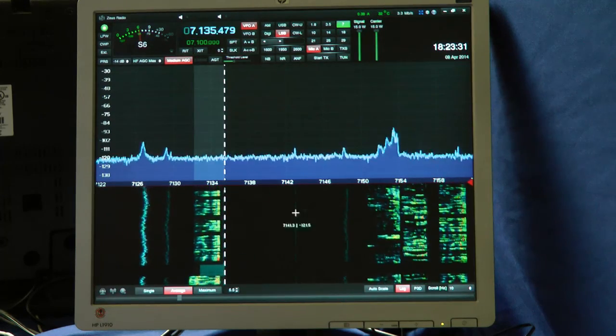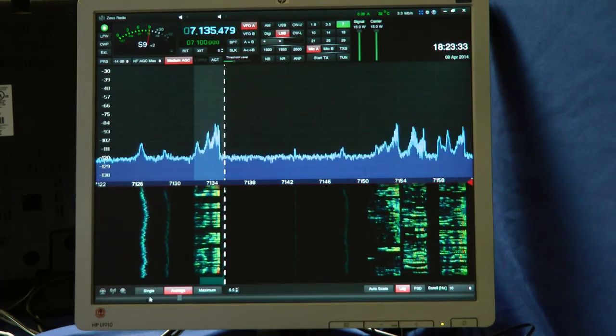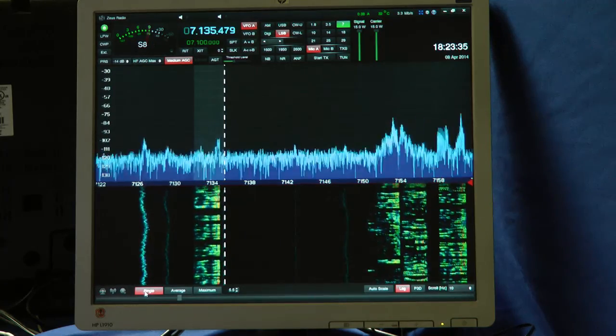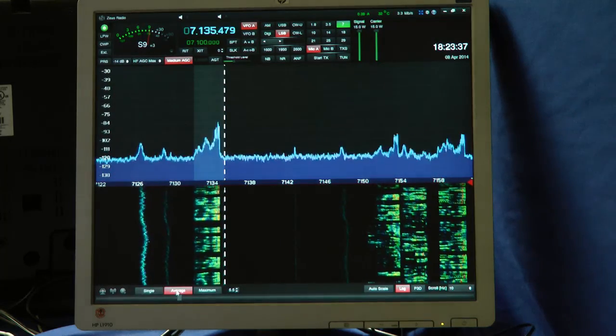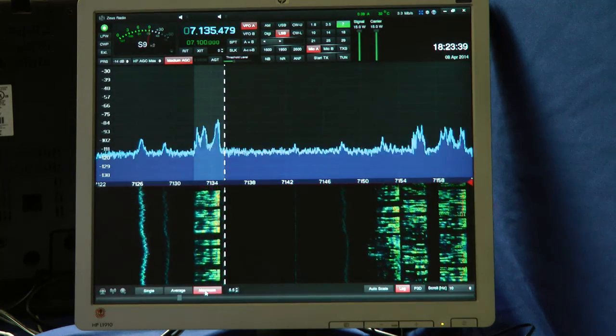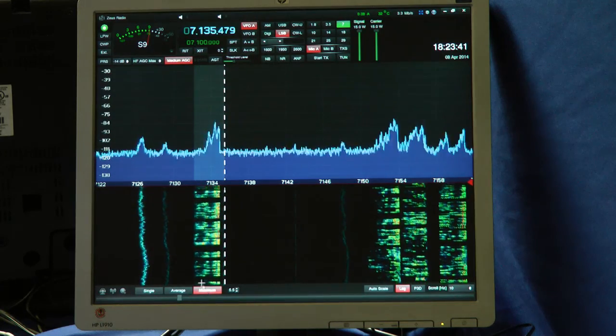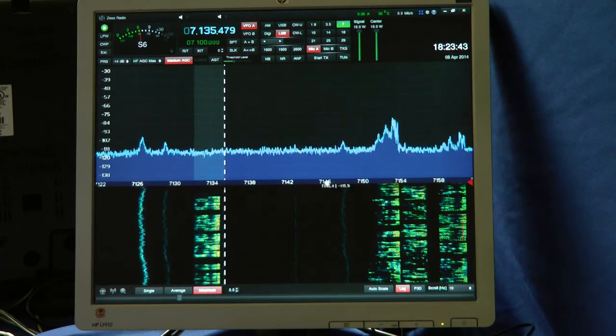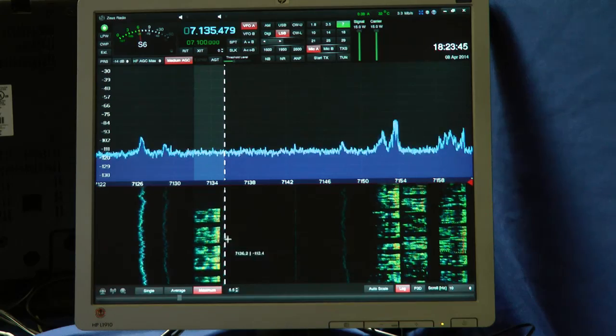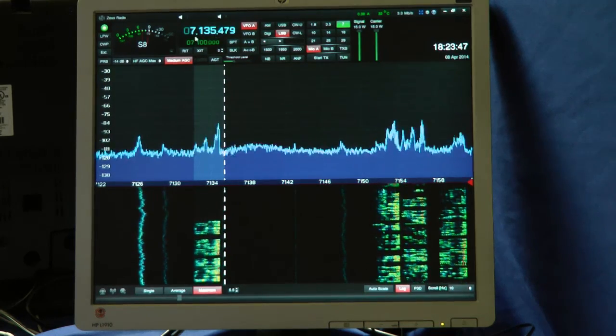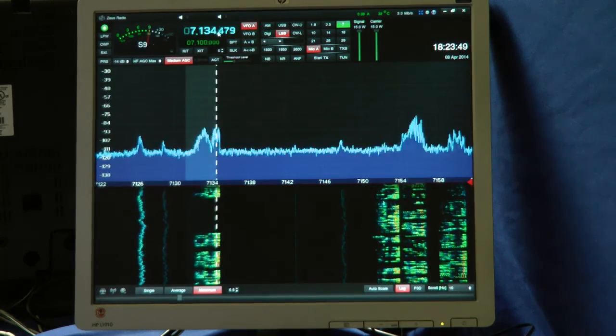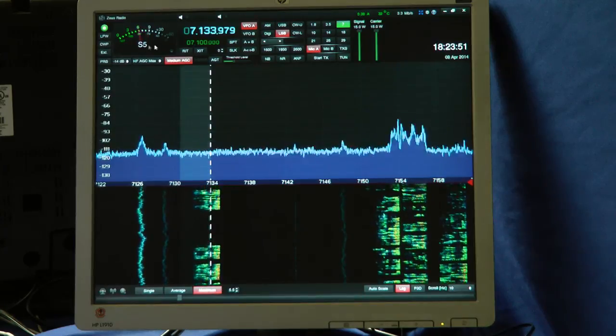And down here, we have the pan adapter settings. We have single, which is very rapid. You can see quick changes. There's an overall average and peak right there. There's your frequency display here. We can do direct key entry with the frequency, or we can just scroll with a mouse. Nice looking S meter, too.